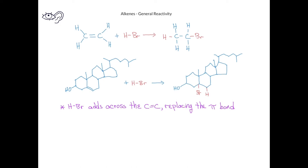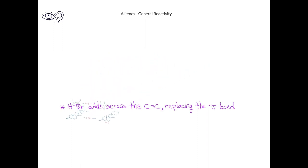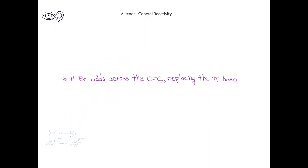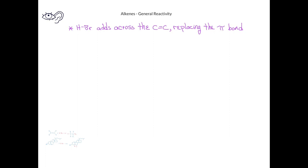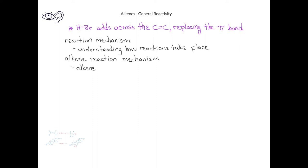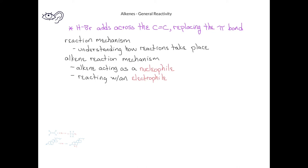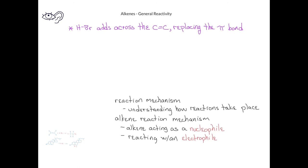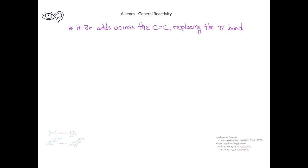Now that we've seen there's a pattern to how alkenes react, let's see if we can understand a little bit more about why new molecules form. Chemists call the process of understanding how reactions take place understanding a reaction mechanism. In general, the alkene reaction mechanism involves an alkene acting as a nucleophile and reacting with an electrophile. Let's look at this alkene mechanism in a little more detail, doing the reaction again with hydrogen bromide.